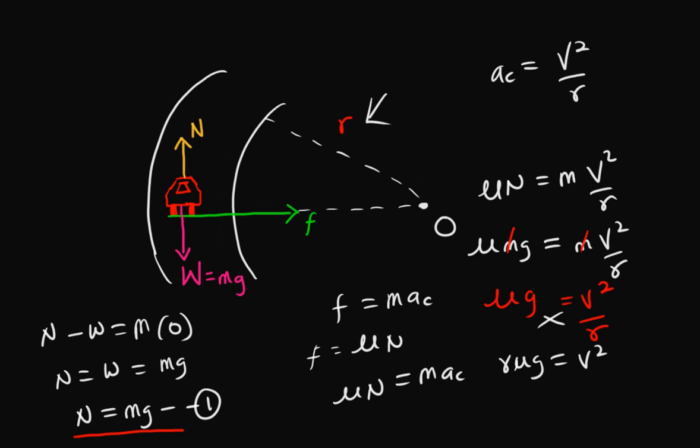To find v, we rearrange: v² = μrg, then take the square root of both sides, giving v = √(μrg). This is the maximum speed the car must move to prevent it from skidding. If the car moves faster than this speed it will skid off the road.